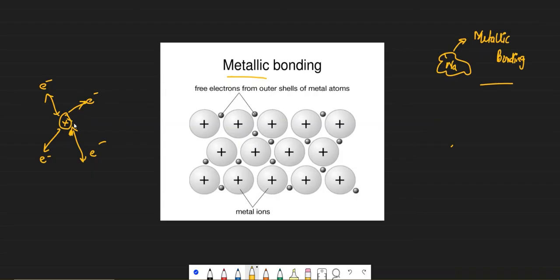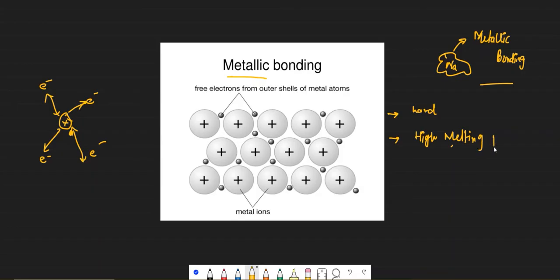Because of these strong electrostatic forces of attraction, metals are usually hard. Metallic bonding is also responsible for all of the properties of metals. First of all, they have high melting and boiling points because they have strong electrostatic forces of attraction between electrons and the positive metal ions — also called delocalized electrons or sea of electrons. These strong electrostatic forces are difficult to overcome, which is why metals have high melting points.